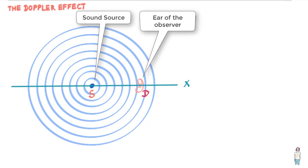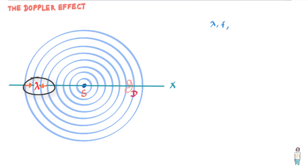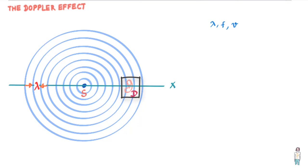Let us derive the equation that helps us find the frequency that an observer actually hears from the source under various conditions. The first condition is the one in which both the observer and the source are stationary. If the wavelength of the sound waves from the source is lambda, frequency is F and velocity is V — the speed of sound — then the frequency detected by observer D is the time rate at which the observer is intercepting the wavelengths. More wavelengths intercepting the eardrum per unit time means more vibrations and therefore higher frequency.